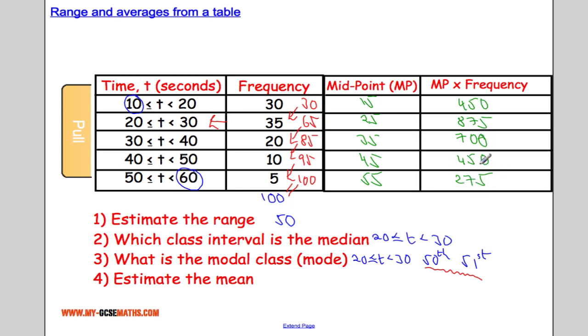Now what I'm going to do is I'm going to add these all together. So we've got 275 plus 450 plus 700 plus 875 plus 450. Adding them all together we get 2750. So to get the mean, I'm going to do this total divided by the total frequency. So quite similar to what we were doing when we had the table earlier on in the video. So 2750 divided by 100 gives us 27.5. So the mean time, an estimate of the mean time is 27.5 seconds.